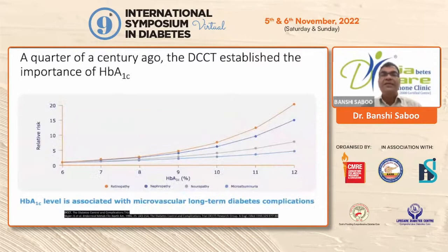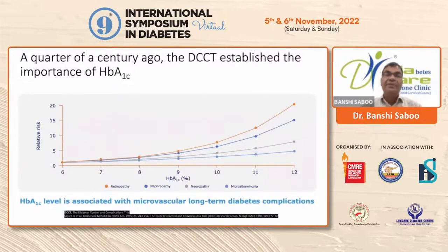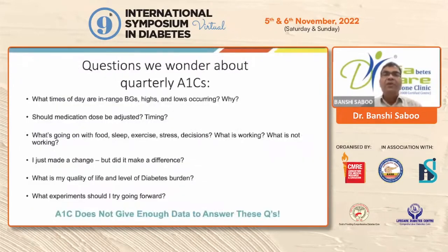Almost 25 years ago, the DCCT established the importance of A1C. Higher the A1C, more the microvascular complication. One should try to keep A1C as low as possible, preferably less than 7, and you will find fewer diabetes complications in type 1 diabetic patients — that's what DCCT established. But if we only check A1C every three months, we don't know what blood glucose levels — high or low — are occurring during that time.